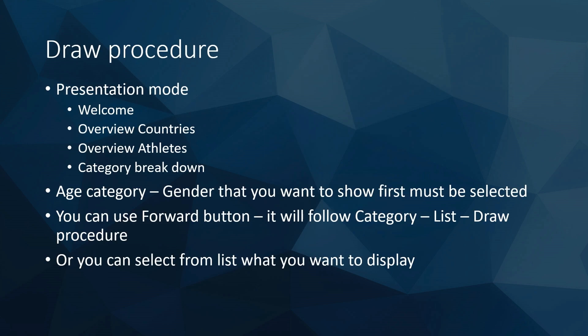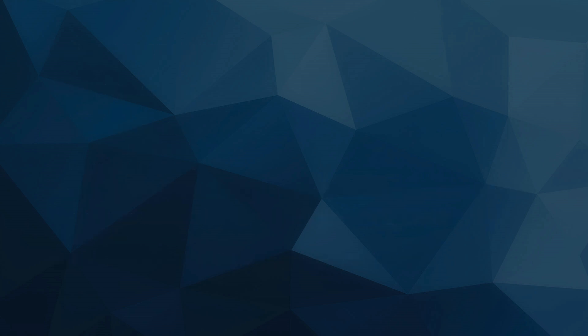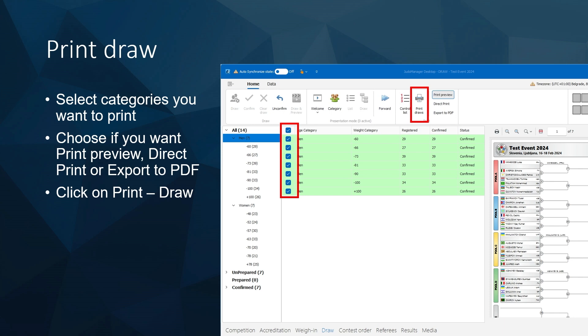The draw procedure goes: presentation mode, welcome, overview of countries, athletes, category breakdown — then select the age category or gender you want first. In the program, men are on top and women on the bottom, so if you want women first, click on women and go through, then continue to the men's categories. You can use the forward button or select from the list. At the end, print the draw — physically or export to PDF and post to the Telegram group.